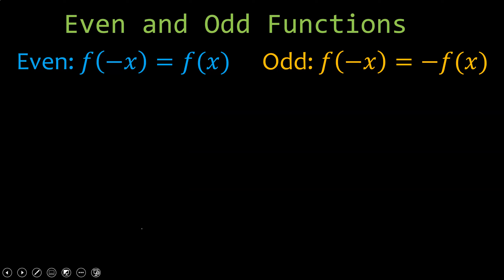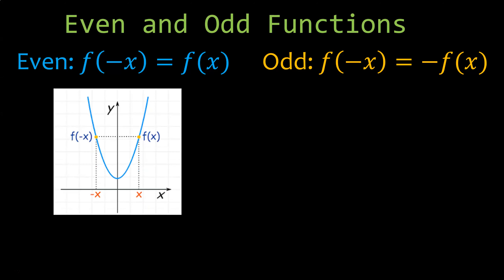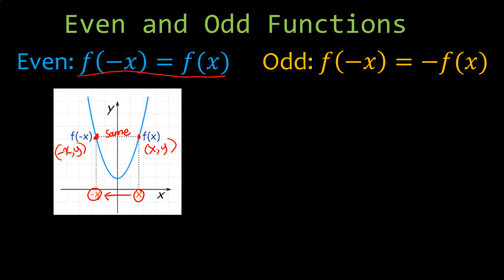Definition: a function is even if f of negative x is equal to f of x. What does that mean? Suppose you have the x value right here — this is a point on the graph, so we call the y value f of x. If you move across the y-axis to negative x, the point on the graph is f of negative x, and they are the same. So this point is (x, y) and this point is (negative x, y).